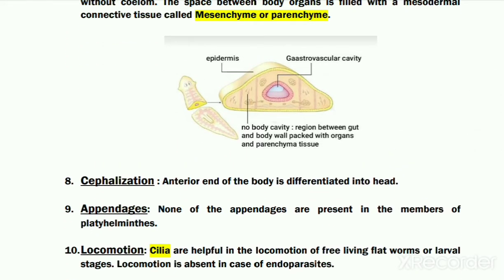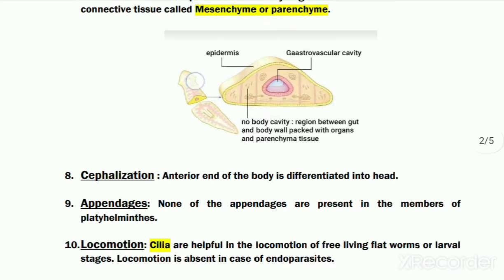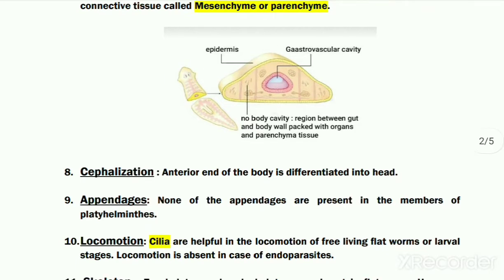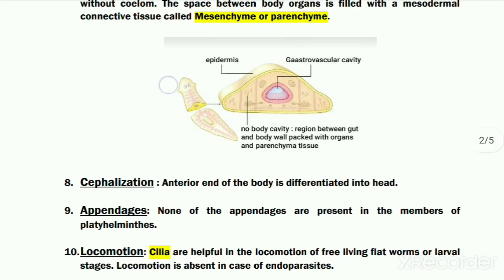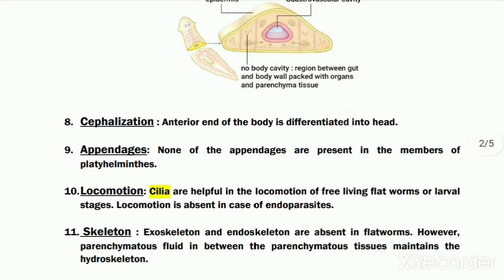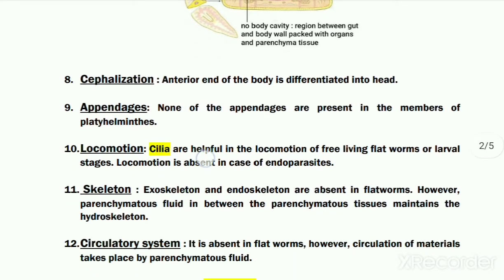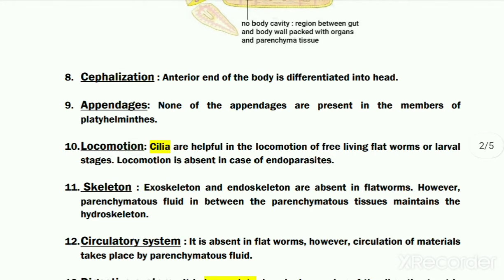These organisms, for the first time, exhibit cephalization. Cephalization means head formation. The head is the anterior-most part of the body in which most of the sense organs, for example eyes and other sense organs, are present. So flat worms have a head. Another feature is that any type of appendages are lacking in flat worms.